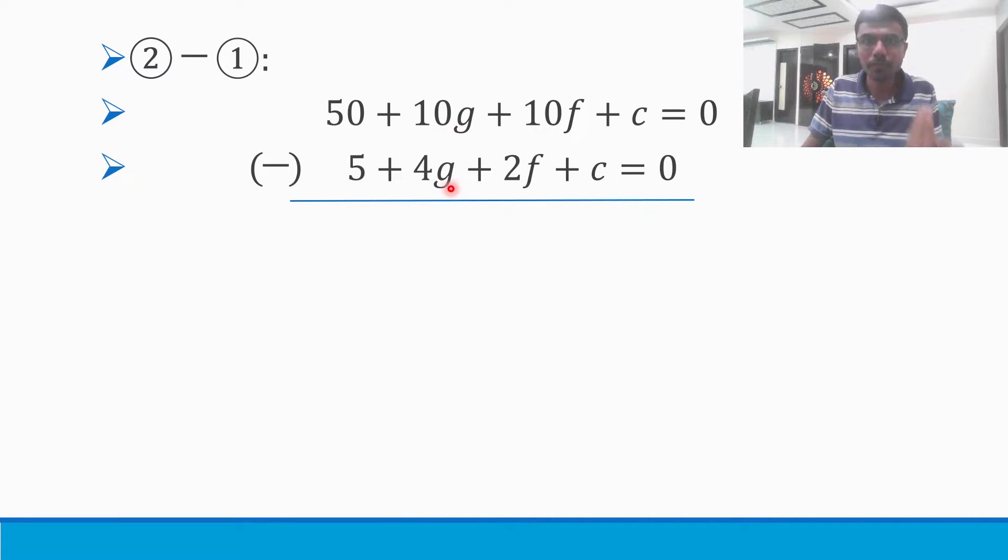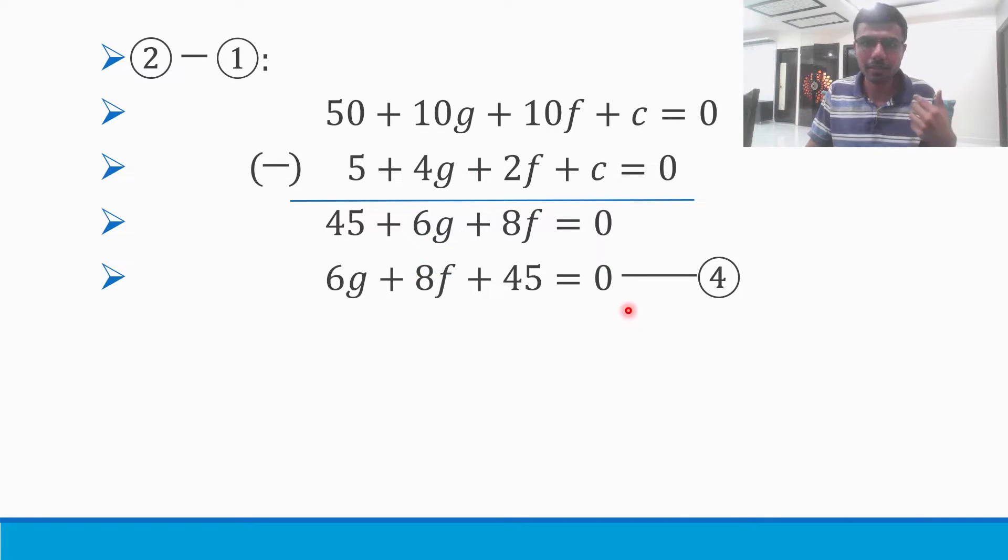Likewise 10g minus 4g is 6g. 10f minus 2f is 8f and c minus c is 0. Just rearrange it, write it in the form g, f and constant: 6g + 8f + 45 = 0. Mark this as equation 4.